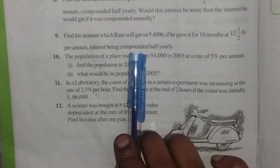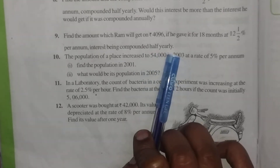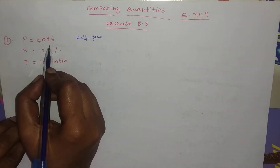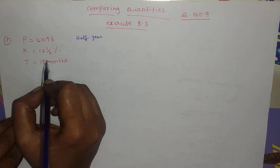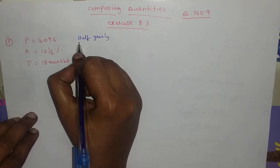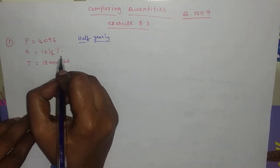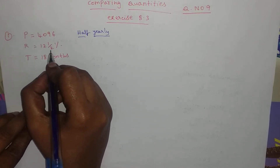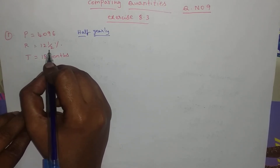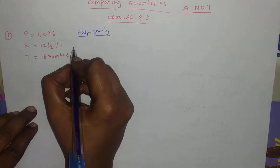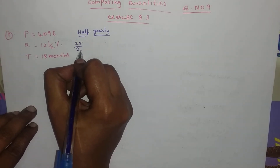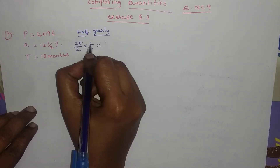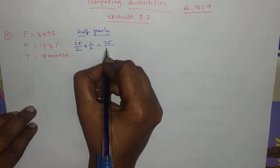Since interest is compounded half yearly, we take the rate for half a year. 12 and a half divided by 2: that is 25 over 2, divided by 2, which gives us 25 over 4. So the rate per half year is 25 by 4.